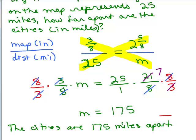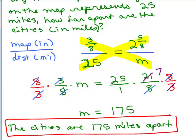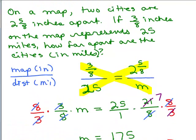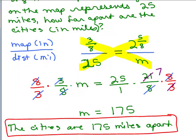And, of course, we want to check to make sure that seems reasonable, 175 miles apart. Looking back up here, 3 eighths inches was 25 miles, so let's see, 175 miles, that's 7 times as much. And so is 3 eighths times 7 going to be 2 and 5 eighths? And actually it is. So it's 7 times 3 eighths is how you would get that 2 and 5 eighths, so it makes sense that 25 times 7 is 175 miles. So that's our answer. The cities are 175 miles apart.